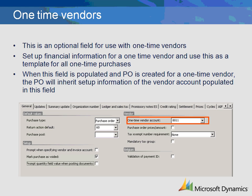The one-time vendor account is optional functionality that can be used when dealing with one-time purchases. You will create a vendor that will represent the terms and conditions used for one-time purchases — this will be a one-time vendor template. When creating a new vendor and you designate it as a one-time vendor, all fields completed within the vendor template will be copied to the one-time vendor, easing the time needed to create a vendor for a one-time purchase. Create a vendor record that will be your one-time vendor template and then select that vendor's code within this field.